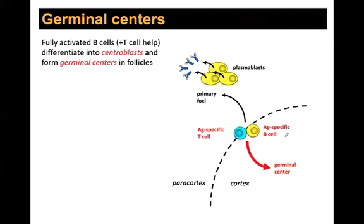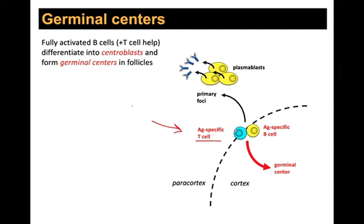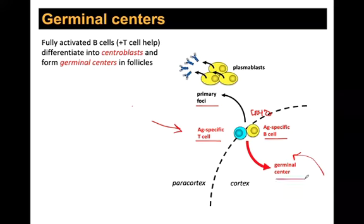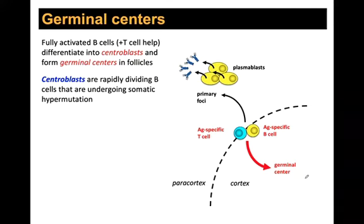If B cells get CD4 T cell help, the full pathway is: T cells are activated by conventional dendritic cells in the paracortex via the HEV, B cells are activated on FDCs in the cortex, and they meet at the cortical-paracortical junction. CD40L on the T cell binds CD40 on the B cell — this signal tells the B cell: all systems go, head back to the germinal center instead of forming primary foci.